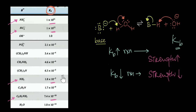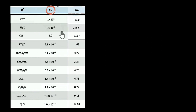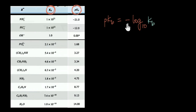Whenever we have data spread across such wide ranges, it's actually better to report them on a logarithmic scale. So chemists generally report this data in the form of PKB, where PKB is equal to minus of log base 10 of KB. Why is there a minus sign? Let's find out.